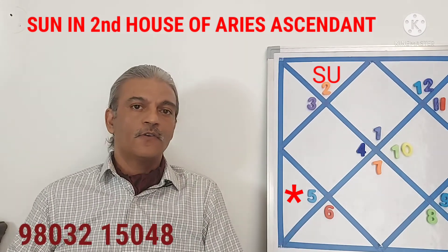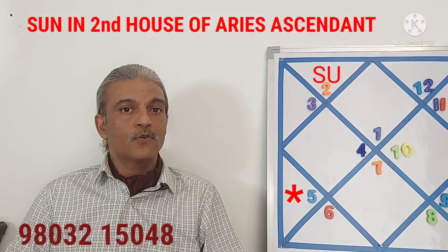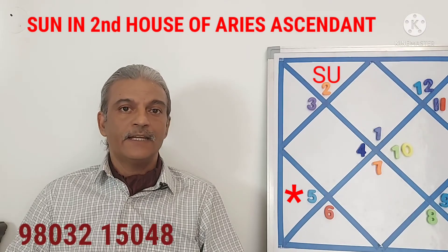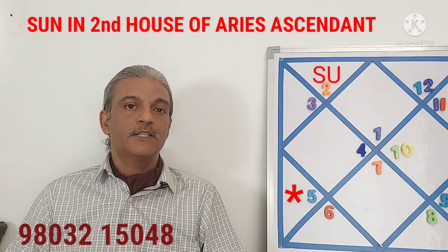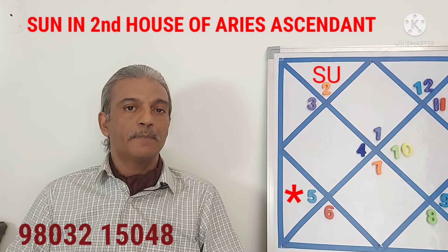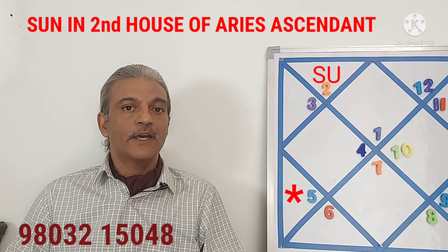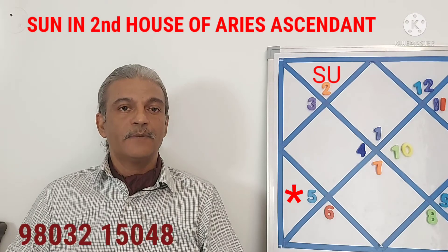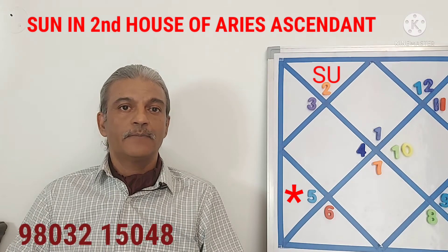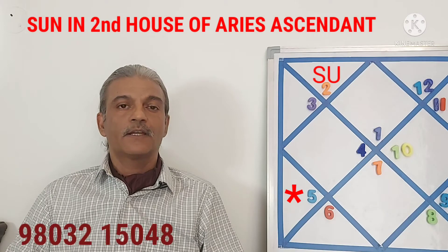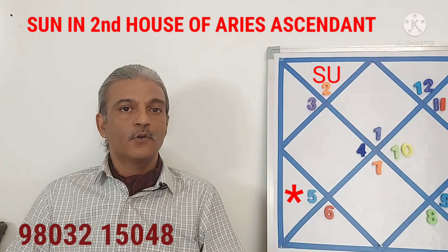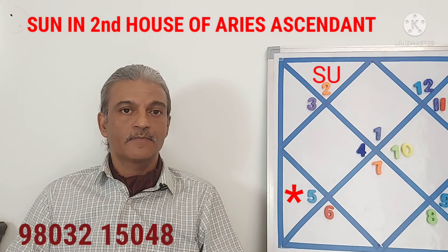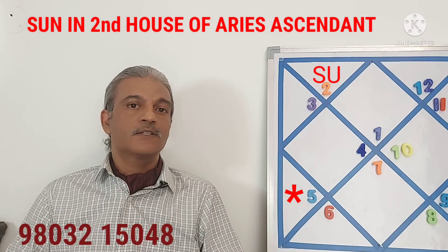The Sun is the lord of Leo. The second house represents speech and Sun, as we know, is the king. So accordingly, the speech of the person will be very impressive. It will be a royal kind of speech with a lot of authority. The person will make dynamic conversation. At the same time, Sun is the righteous planet and therefore the person's speech will be righteous. He will always say the correct things. He will always speak truth.